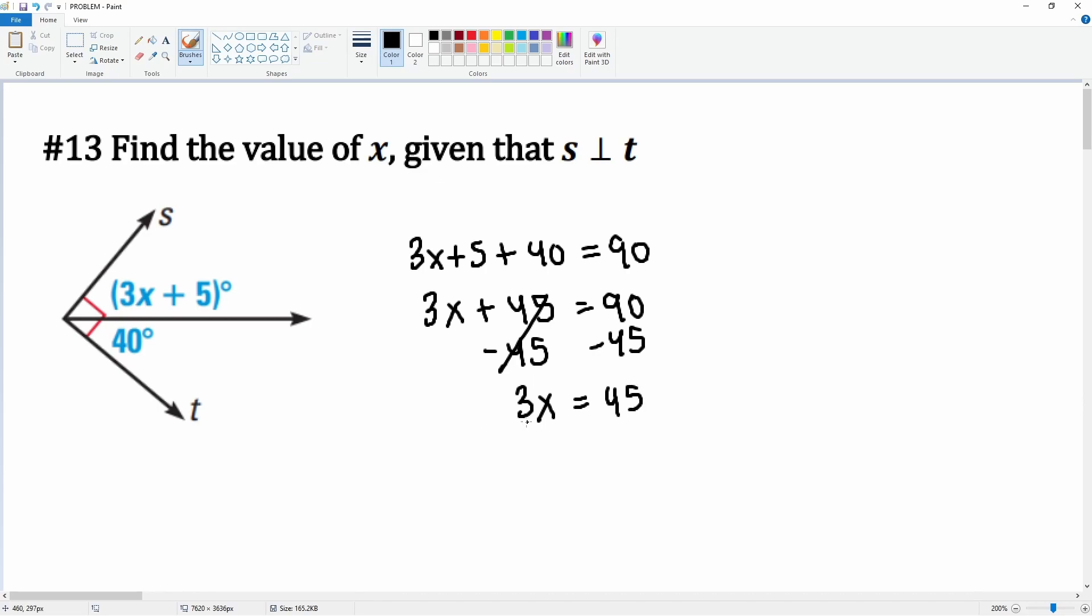Now you want to divide by 3 on both sides. 90 subtract 45 is 45, then we divide this by 3. This gets you 15. There you go, x is equal to 15. All right, that's all it asks you to do is solve for x.